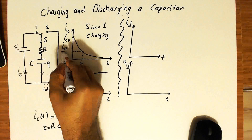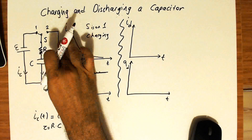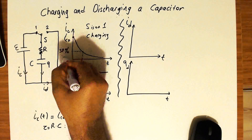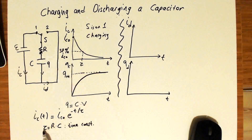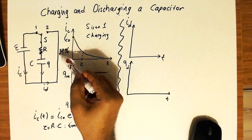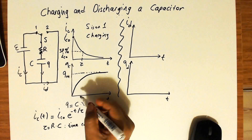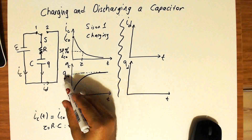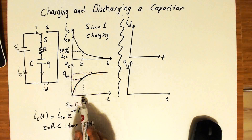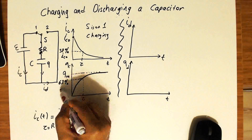More specifically, putting in the numbers, IC0 divided by e is nothing but 37% of IC0. So when time T equals the time constant tau during the charging process, the current drops to 37% of its maximum value. Similarly, when time T equals tau, the capacitor charge will reach 63% of its maximum value. This is the meaning of the time constant.